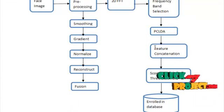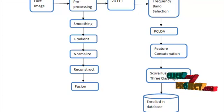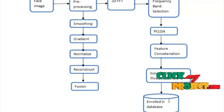Then concatenate all three feature values and calculate Score Fusion for all three classifiers, then store them in the Database. This completes the training procedure.